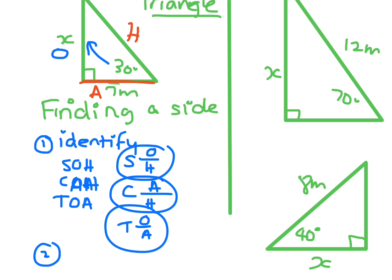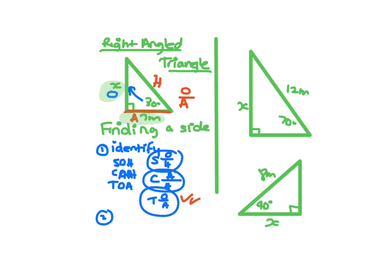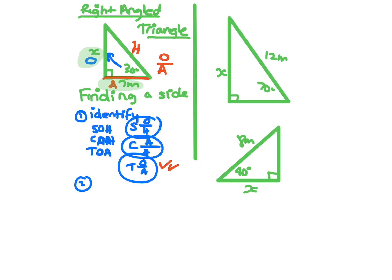So the two sides that we're given here is the opposite and the adjacent. So we're looking at O on A. So we're looking at tan, toa. So once you've done that, the next step that you have to do is you have to set it up. And it's important to write this step, not to skip it.